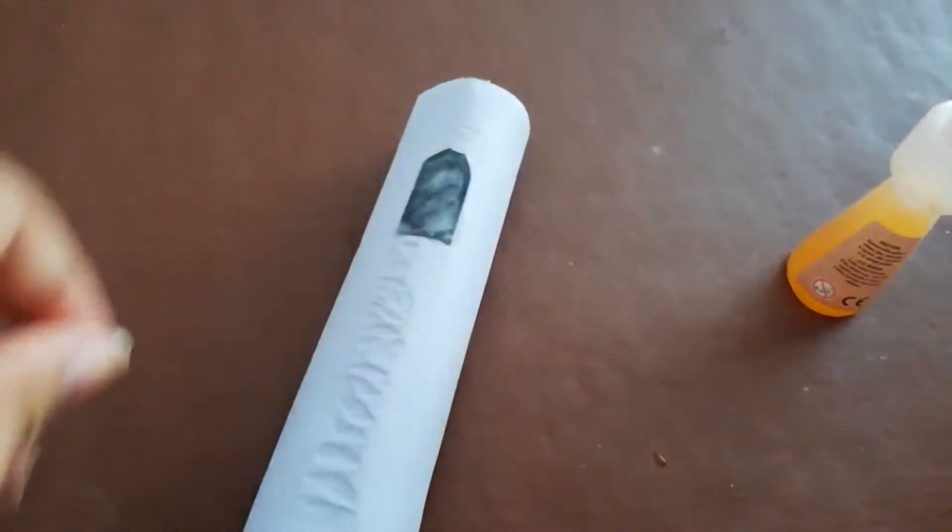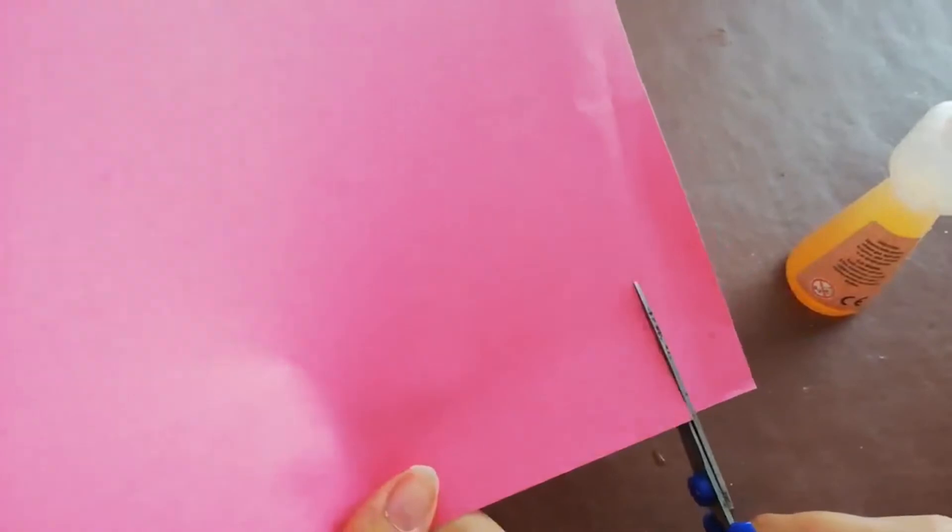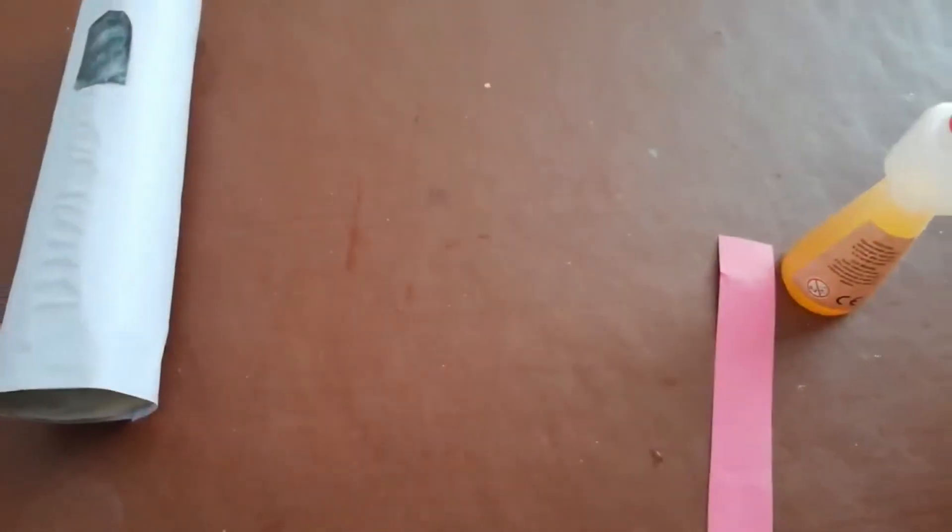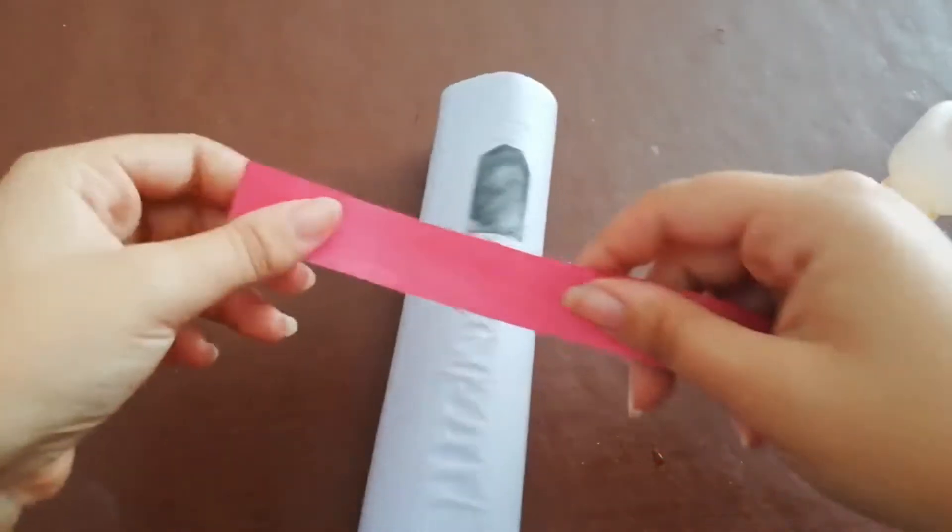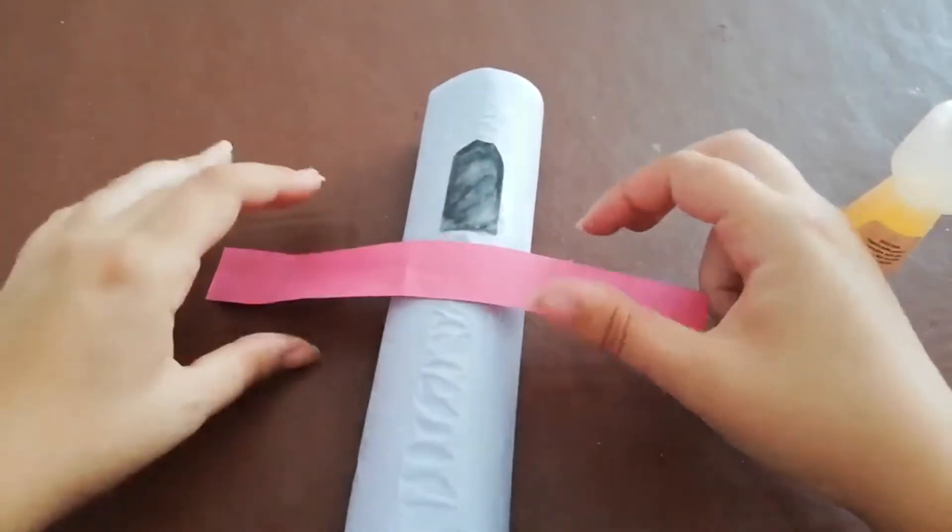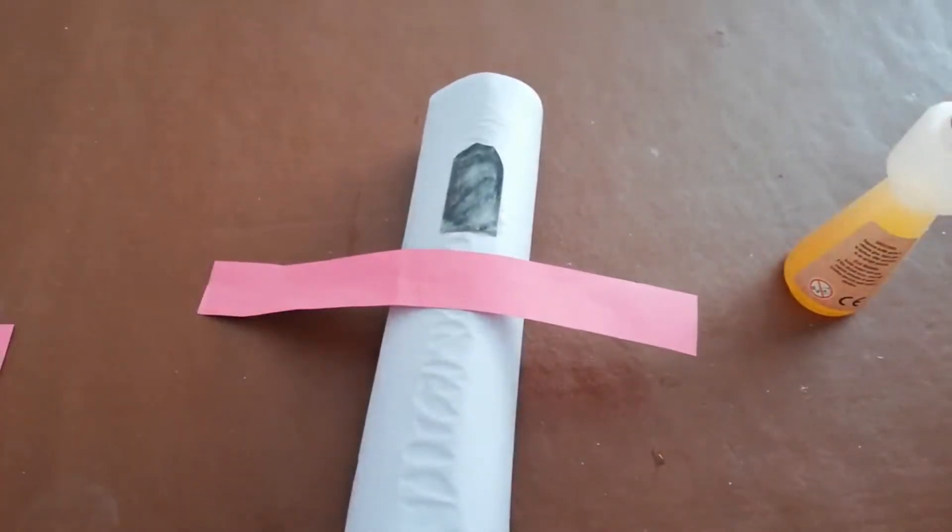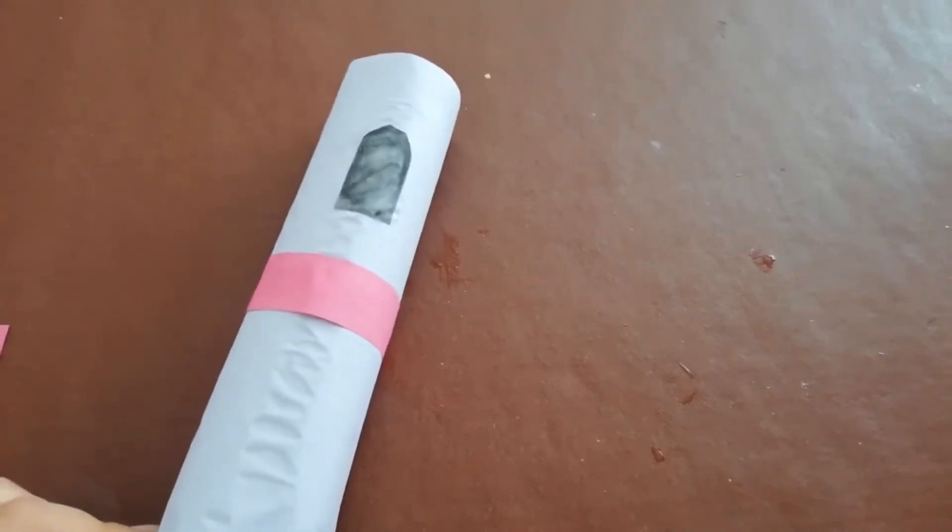Our next step is to get our second color piece of paper. So, I'm going to get my pink color. And I'm going to cut a strip off the end, and this will be used to go around the middle to decorate. Like that. And I'm going to be gluing that around the middle to decorate. Don't worry if it's too long, because you can cut it after. Like that.